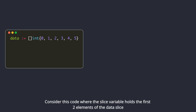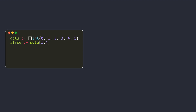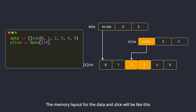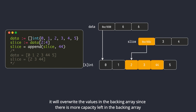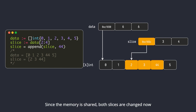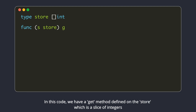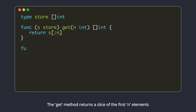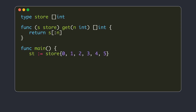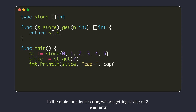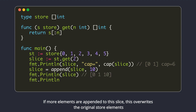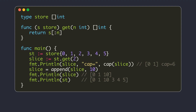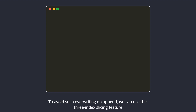Consider this code where the slice variable holds the first two elements of the data slice. Now if you append more elements to the slice, it will overwrite the values in the backing array since there is more capacity left. Since the memory is shared, both slices are changed. In this code, we have a get method defined on the store which is a slice of integers. The get method returns a slice of the first n elements. If more elements are appended to this slice, it overwrites the original store elements.